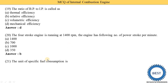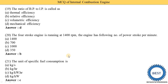Next MCQ: the unit of specific fuel consumption is — option A: kg/s, option B: kg/h, option C: kg/kWh, option D: kg/kW. Option C is the correct answer — kg per kilowatt-hour (kg/kWh) is the unit of specific fuel consumption.